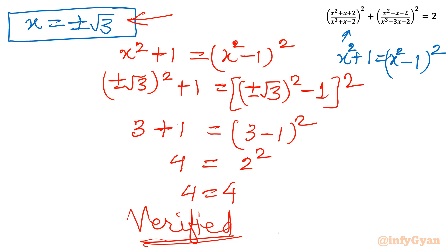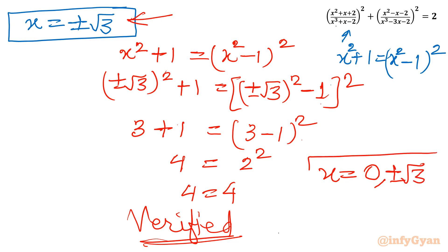So the ultimate solutions of this rational equation are x = 0 (with multiplicity 2) and x = ±√3. I hope this video was interesting for you. Don't forget to like, share, and subscribe. Bye-bye till next video, take care of yourselves friends!